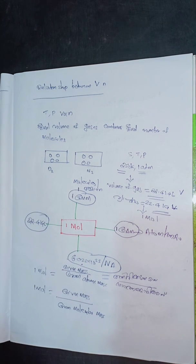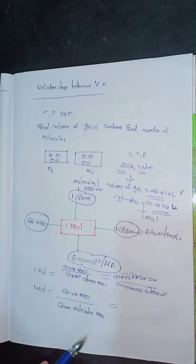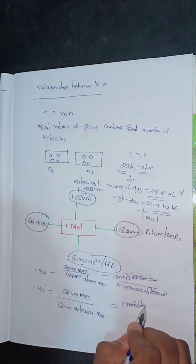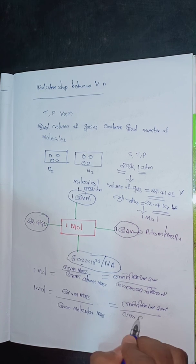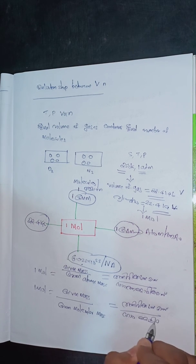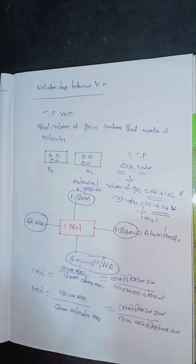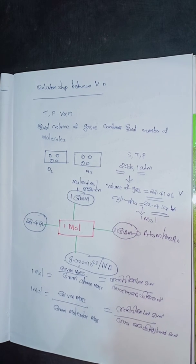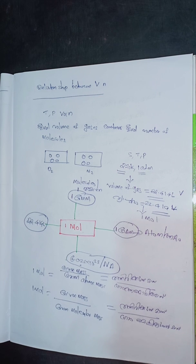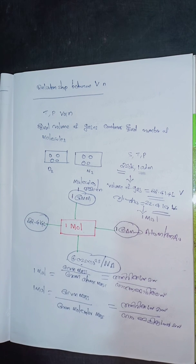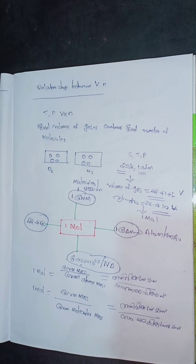1 mole = given mass divided by gram atomic mass. 1 mole = given mass divided by gram molecular mass.